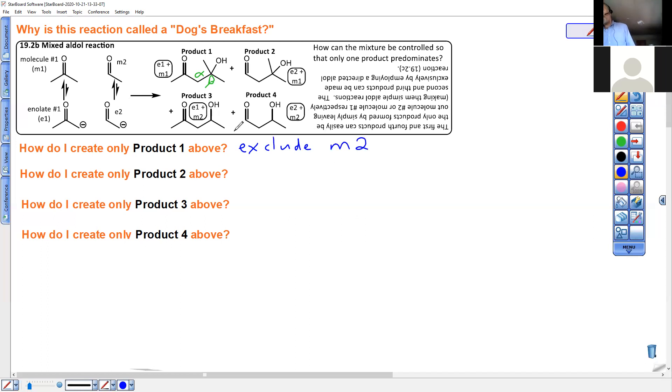Similarly, the fourth product where there's no reaction at all with enolate one or molecule one is created by excluding molecule one. Those were called simple aldol. Some references call them self-aldol. And this one also a simple or self-aldol.